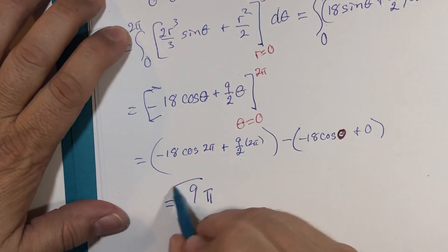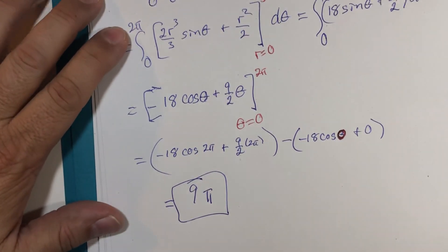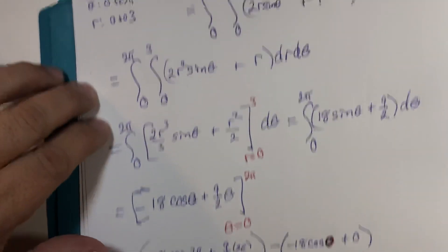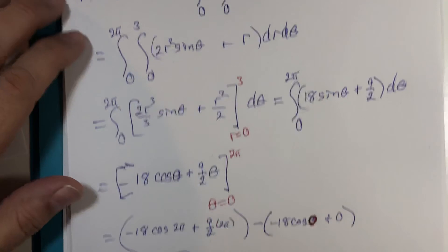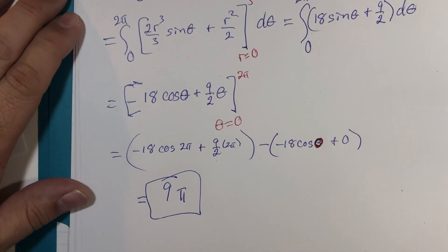It is the net work traveling around a circle of radius 3 with that vector field acting on it. All right. There you go.